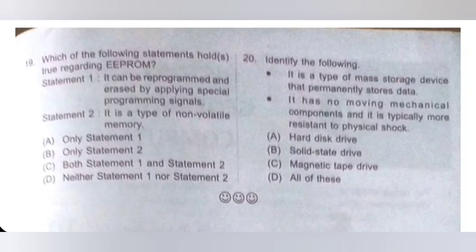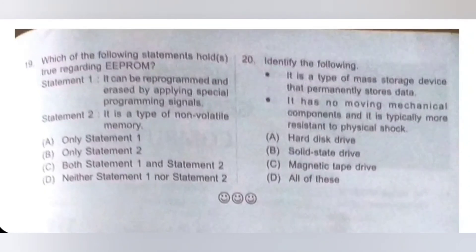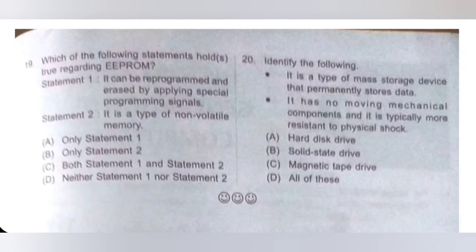Twentieth question — last question. Identify the following: it is a type of mass storage device that permanently stores data, has no moving mechanical components, and is typically more resistant to physical shock. Options: A) hard disk drive; B) solid state drive; C) magnetic tape drive; D) all of these. A solid state drive (SSD) is a non-volatile storage device that stores persistent data on solid state flash memory. Option B is the correct answer. Thank you my dear kids for watching this video. If you like this video, please like and subscribe.